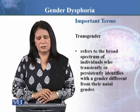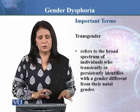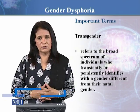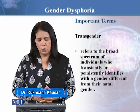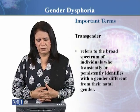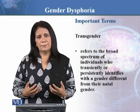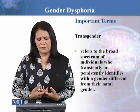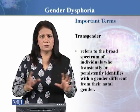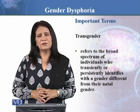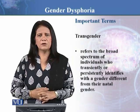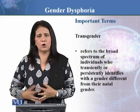It is important to understand a few terms which are relevant to gender dysphoria. The first one is transgenders. We use this term very often, so let's see what it actually means. It refers to the broad spectrum of individuals who transiently or persistently identify with a gender different from their natal gender. For example, a girl would normally identify with her mother, sisters, or other girls.